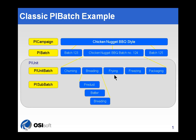In this case, churning, breading, etc. And then you can divide that further into sub-batches, and those things can overlap. Let's just pretend that that's how your manufacturing environment works. You have these repeated events — this is batch 123, we basically repeat that to get 124 and then 125. There are a series of repeated events, and within those events, there are other events that repeat over and over again. Each batch has its churning unit batch, its breading unit batch, etc.